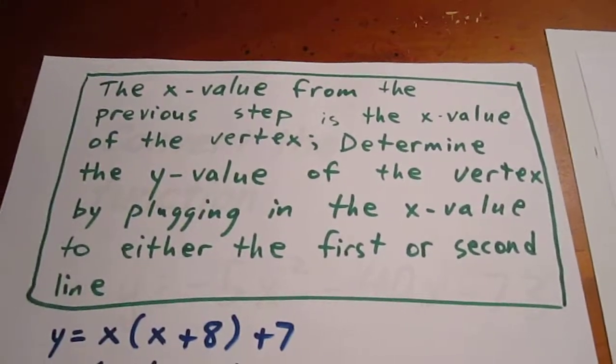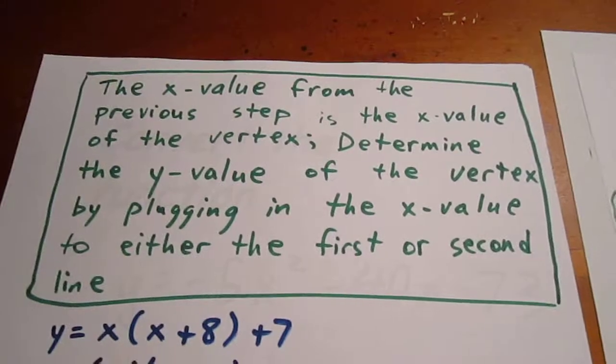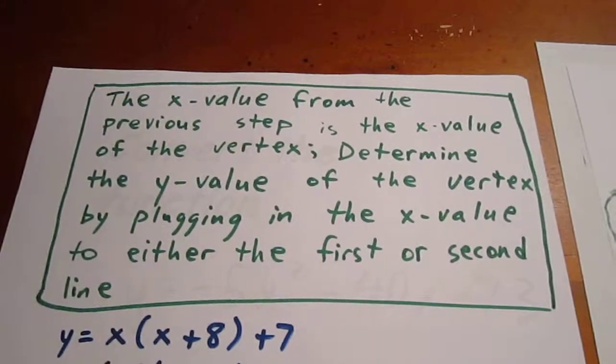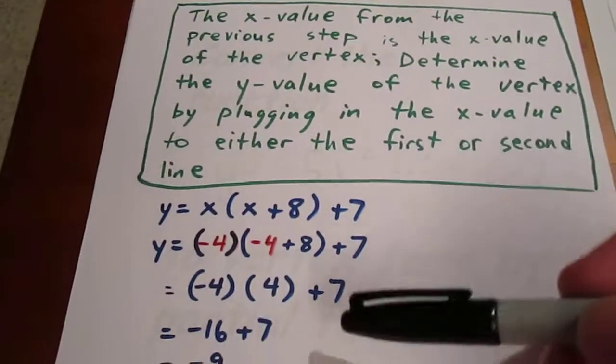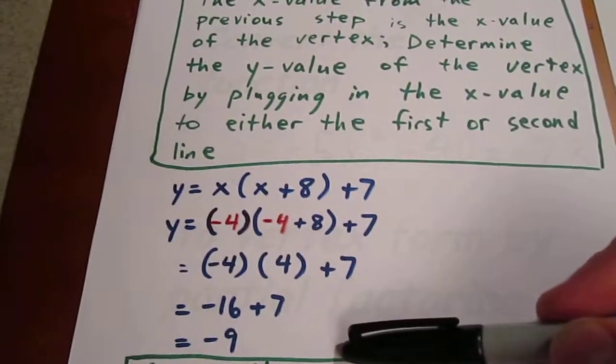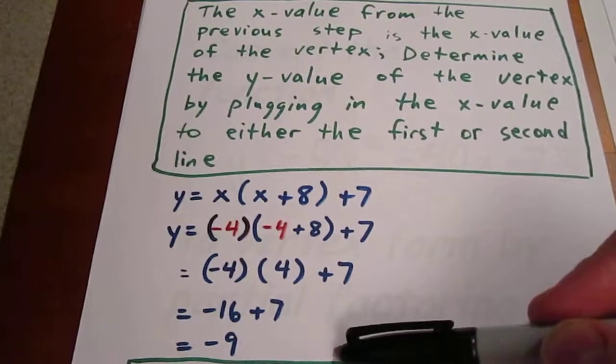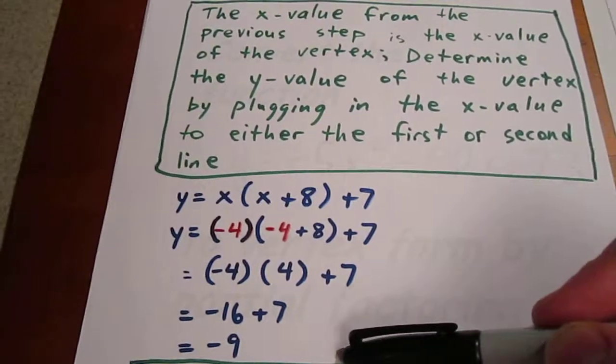We can now take that x value of negative 4 and plug it into the function equation to determine the y value of the vertex. When we plug negative 4 in here, we get a y value of negative 9. That means our vertex is at negative 4 comma negative 9.